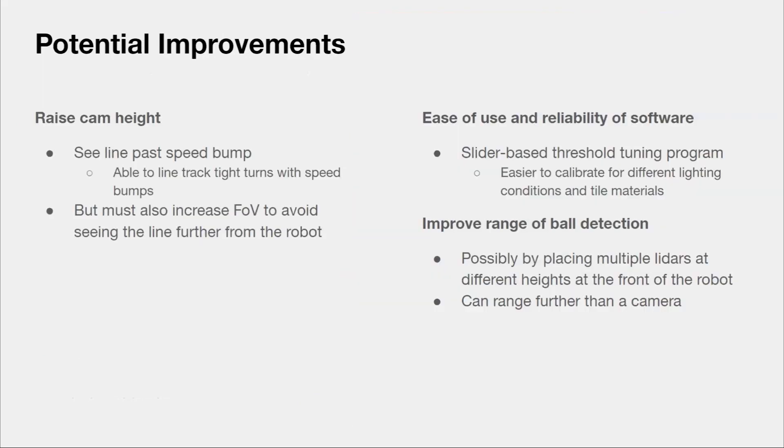Some future improvements we plan to make is to raise the camera higher, since we realized that it was unable to see turns past the speed bump which was quite high, making the line track more unstable with multiple speed bumps on tight turns. It also means that we can see more of the wall from further away, improving our victim detection. However, we would have to increase our vertical field of view to avoid seeing the line further from the robot wheels. For calibration, we plan to use a slider-based threshold tuning program to make it easier for us to tune the different HSV values in different lighting conditions and materials easily and more reliably. We can also place multiple LIDARs at different heights at the front of the robot, allowing it to range further than a camera would in picking up the ball, as it allows the robot to scan a huge range of the evac zone in front of it to know exactly where the balls are.